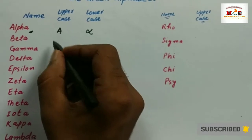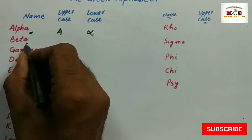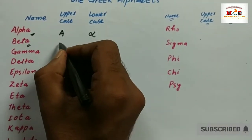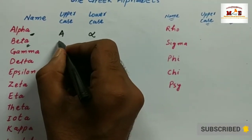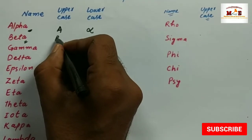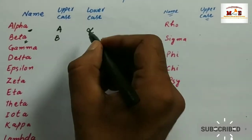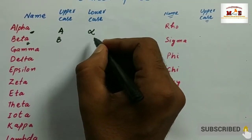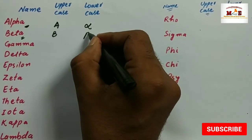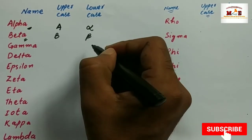The second one is beta. Its uppercase is like English B, and its lowercase is written like this.